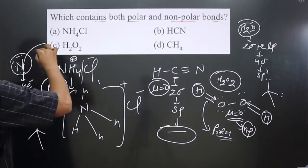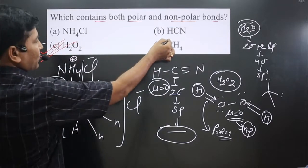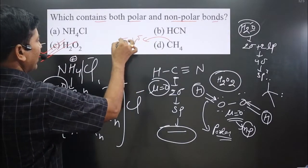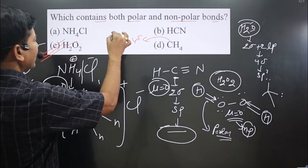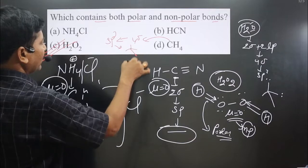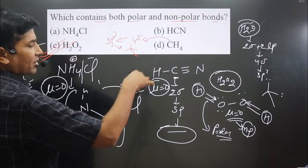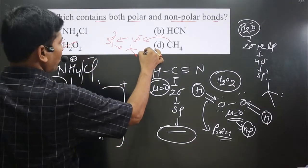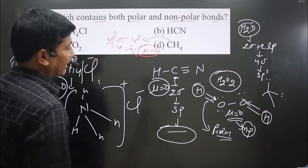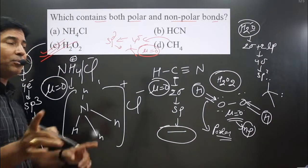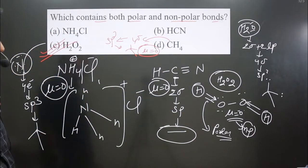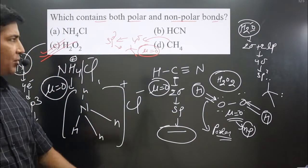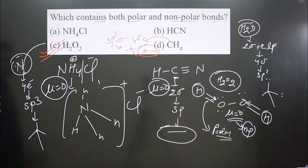For CH4: four sigma bonds, sp3 hybridization, tetrahedral geometry. Carbon does not carry any lone pair, so dipole moment is zero — it is completely 100% non-polar. Therefore option C (H2O2) is correct as it contains both polar and non-polar bonds. If you like this video, please share and subscribe to the channel.